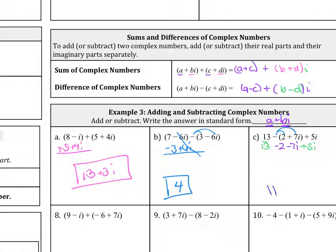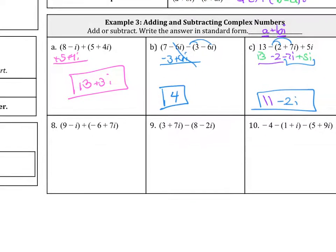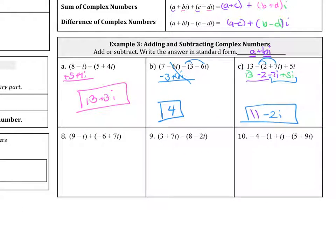And then we do the i. Negative 7i plus 5i is a negative 2i. And we're done. So try out 8, 9, and 10 on your own.